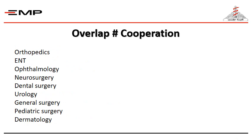There is an overlap — or better described as cooperation — between plastic surgery and orthopedics, ENT, ophthalmology, neurosurgery, dental surgery, urology, general surgery, pediatric surgery, and dermatology.